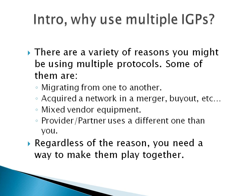Mixed vendor equipment is another reason. EIGRP is Cisco's proprietary protocol — only Cisco uses it. So if you're running Juniper, Extreme, or Foundry equipment, you're using OSPF instead of EIGRP and they need to communicate. Also, you might be working with a provider — it's very common for internet providers to run BGP externally. You might redistribute BGP into your IGP, or redistribute specific routes from your IGP into BGP. Regardless of the reason, if you have multiple IGPs you need them to talk to each other.